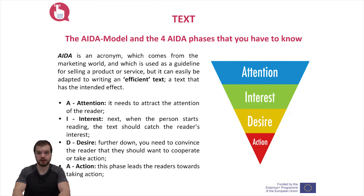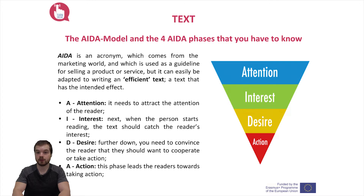D — Desire: further down, you need to convince the reader that they should want to cooperate or take action — that they actually want to help out with your project. For example, by donating money, by coming to your meeting, by visiting your website. You convert the initial interest to desire.